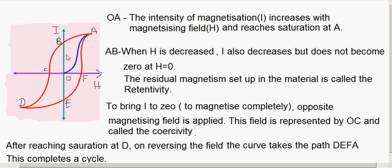We can define retentivity as: the value of intensity of magnetization of a material when the magnetizing field is reduced to 0 is called the retentivity of the material. There are two important terms here — one is retentivity and the other is coercivity, which I will explain shortly.